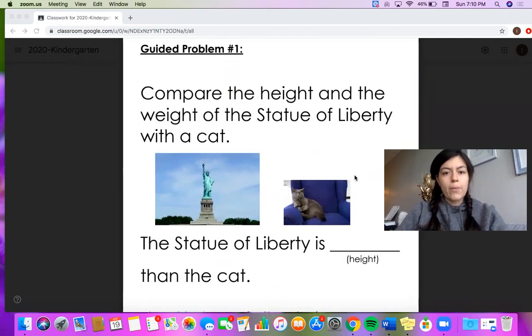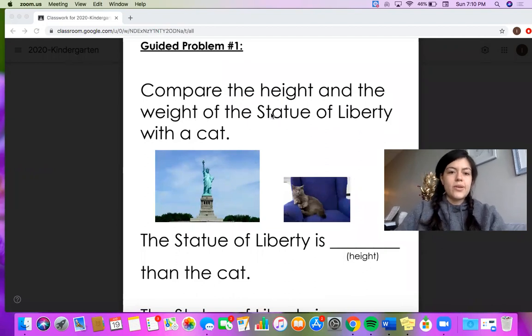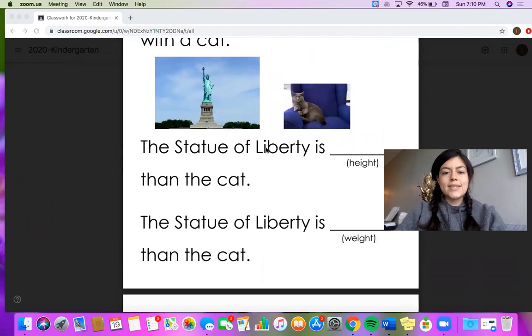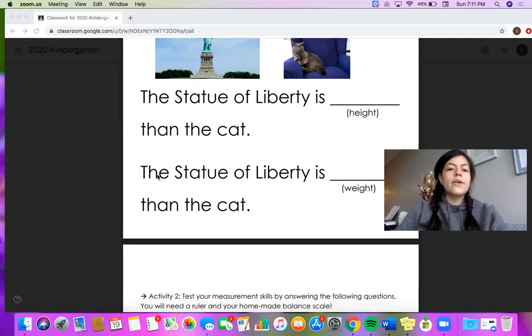Let's see how we can do that with guided problem number one. This problem has a picture of a Statue of Liberty and a kitty cat and they're asking us to compare the height and the weight of the Statue of Liberty with a cat. So let's read the sentence and there is a blank space we need to fill. The Statue of Liberty is then the cat. There's another sentence here. The Statue of Liberty is then the cat.